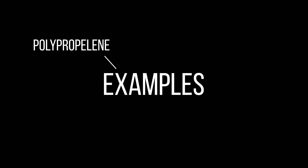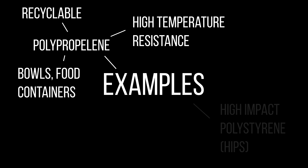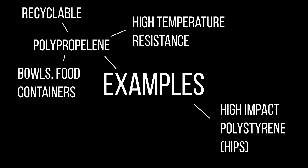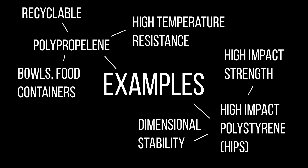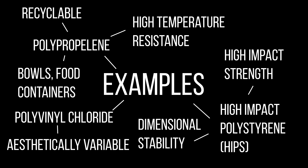Specific examples of thermoplastics include polypropylene, which is a plastic with high resistance to temperature and is very recyclable, and therefore is used in bowls and food containers. Another example is high-impact polystyrene, which has high impact strength and dimensional stability, which means it is often used in kitchen utensils as well as signs. Finally, polyvinyl chloride is a thermoplastic that comes in a variety of colors, providing a wide range of aesthetics and can be either stiff or flexible with the help of a plasticizer. It is commonly used in shampoo bottles, the creation of credit cards, and is also used in piping.